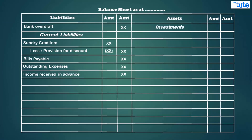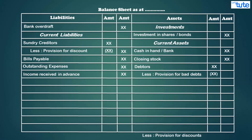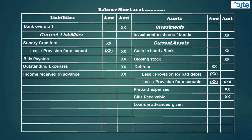Next are investments, which include shares, debentures, savings certificates, and similar items that earn interest or dividends. Then we have current assets, which include cash, stock, debtors, and similar items that remain in the business for only a short time. Current assets are constantly converted into cash. This also includes prepaid expenses, income receivables, bills receivables, and loans and advances given.